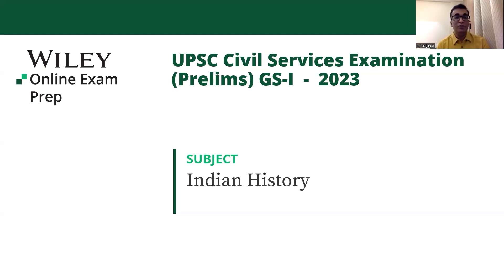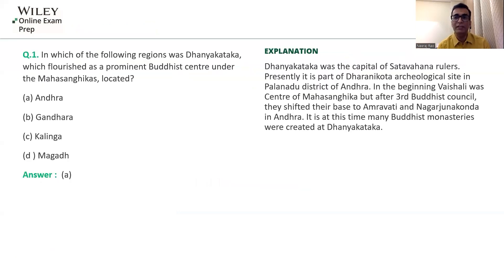The new type of question — 'how many pairs are correct?' — was altogether a very different experience and people were stumped because of it. Let's get started with the explanation of all these questions. There were a total of 13 questions this year.